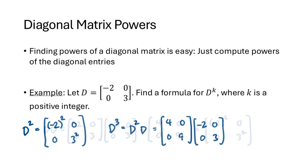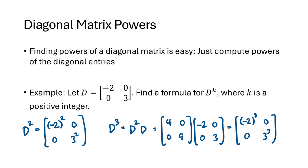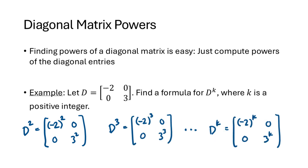To compute D cubed, we can either multiply D squared times D or D times D squared — either way gives us the same result, matching our formula with (-2)³, 0, 0, 3³. Continuing in this way, D to the K is (-2)^K, 0, 0, 3^K. This works for diagonal matrices of any size.